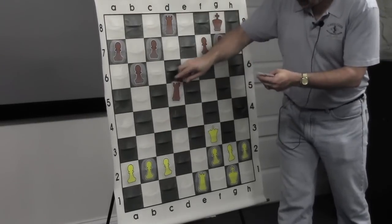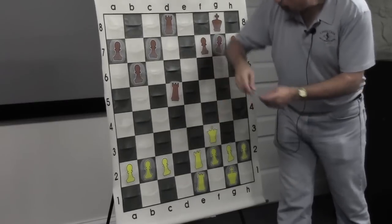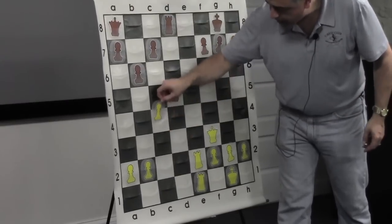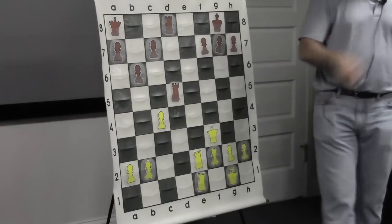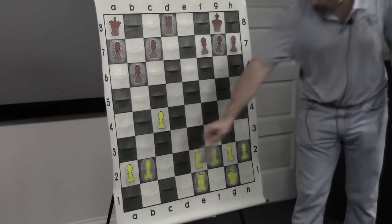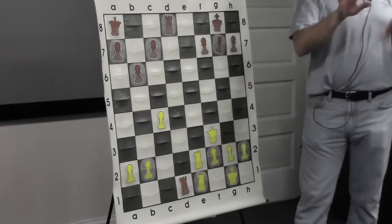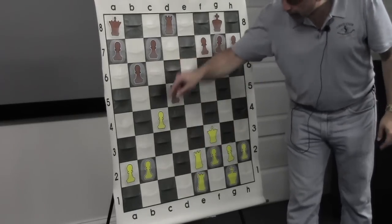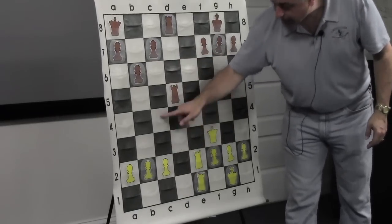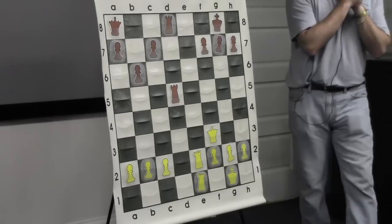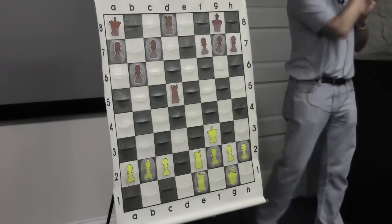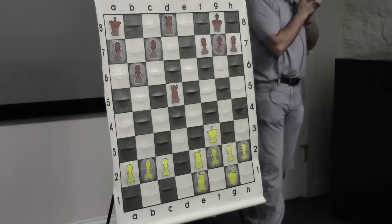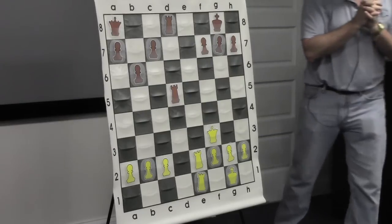So c4 attacking the rook would only work if black didn't find his only move. After this move, the position's about balanced. So we've got to find a better move than c4, even though c4 looked really attractive. Queen takes d5. Brilliant. Bingo.